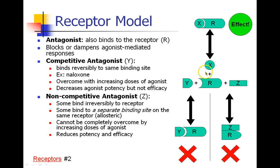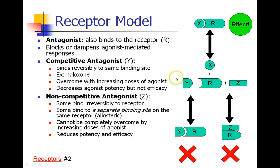Now we have the agonist and antagonist fighting with each other for the receptor site. When the agonist wins, the patient gets the symptoms of fentanyl. When the antagonist wins, the fentanyl doesn't work. So as I give increasing doses of agonist, I can overcome the antagonist — and if I give increasing doses of antagonist, I can overcome the agonist. Therefore, as I give some antagonist, the drug is still just as efficacious.